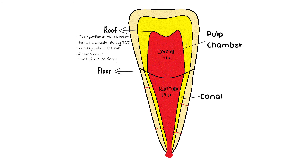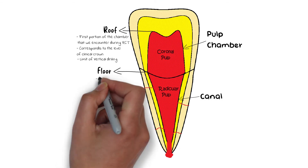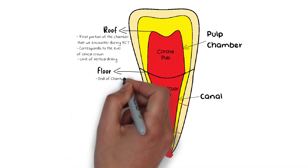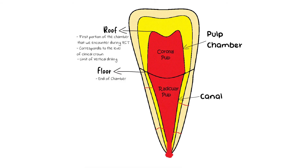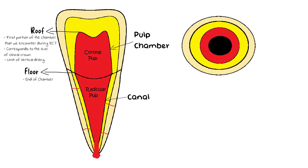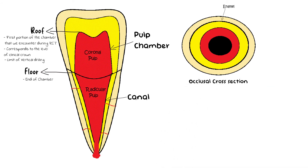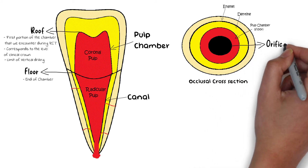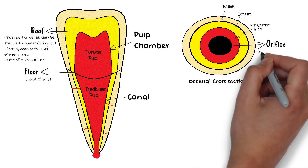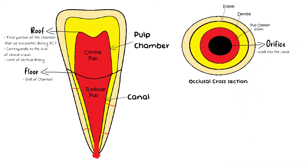Vertical drilling during root canal should only be limited to the roof of the chamber. I will discuss the minute details of root canal treatment in my future lectures. Moving on to the floor of the chamber — the floor is the end limit of the chamber, where the crown of the tooth terminates. If we view the floor from the occlusal surface, we observe small openings known as the orifices. These orifices are the starting point of the canals, and hence each orifice leads into a canal.